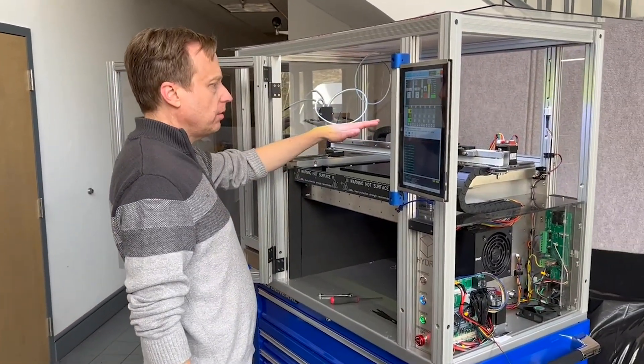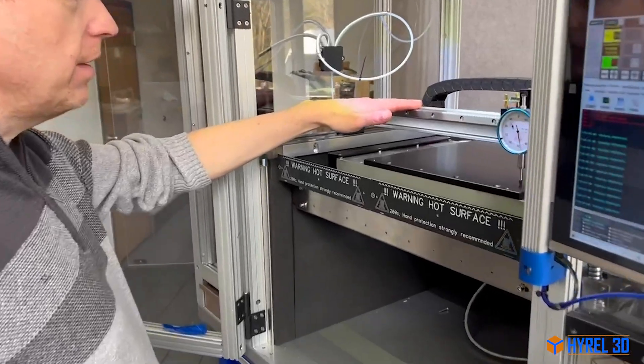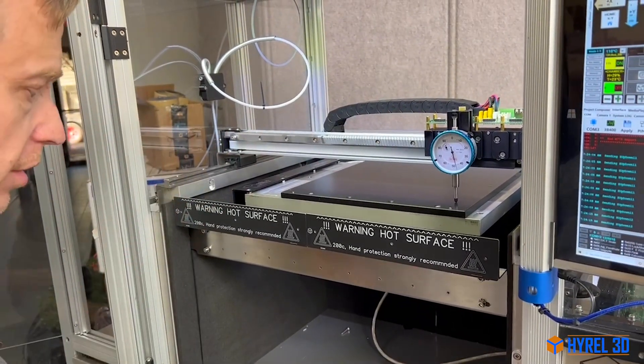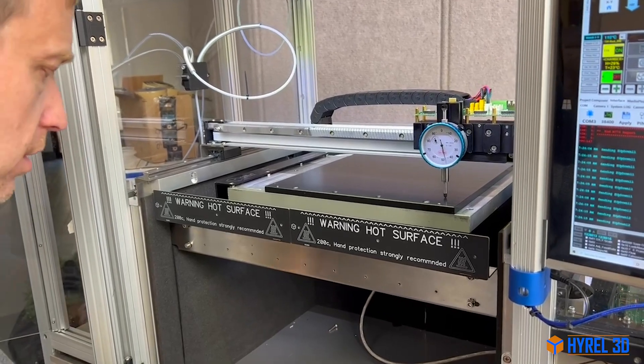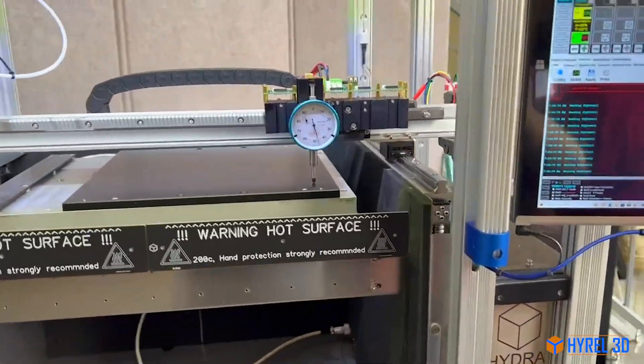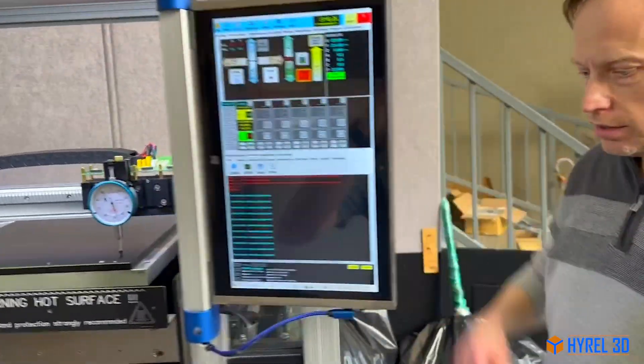Okay, we're going to show you quickly how to tram and level the bed on the Hydro 21. It's a little different than our previous machines, so if you're used to those, it's a different procedure. First thing you want to do is remove the side panel which slides out of the extrusion.